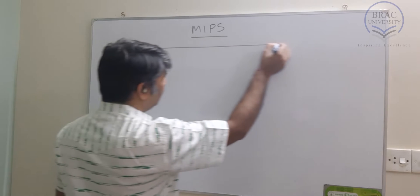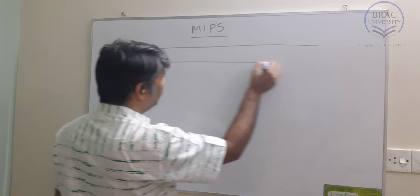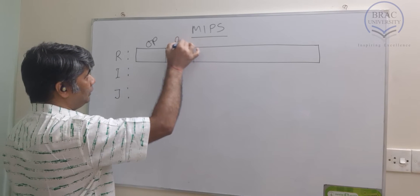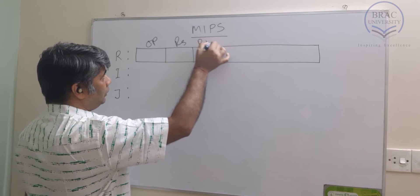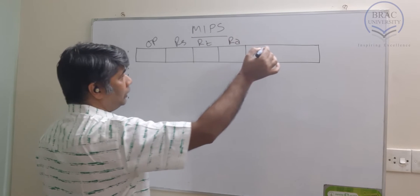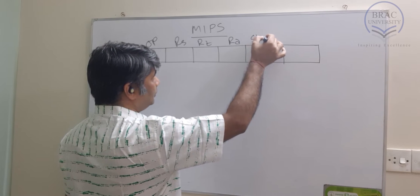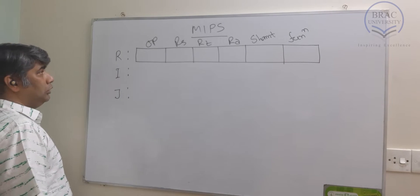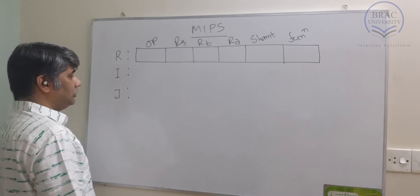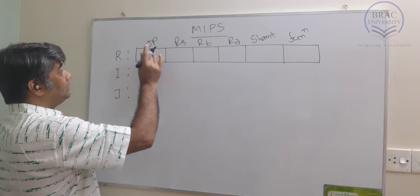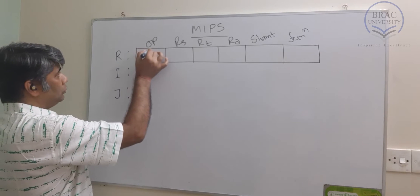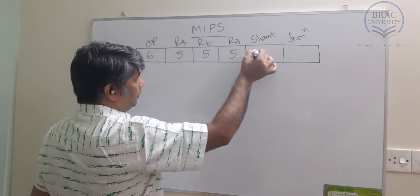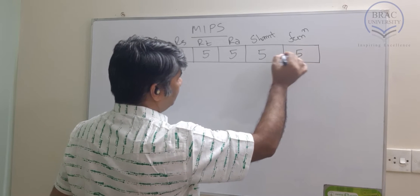The MIPS instruction formatting looks like this. We have opcode, then we have RS, RT, RD, shift amount (SHAMT), and then we have function. All instructions — R, I, or J — are 32 bits. The opcode contains 6 bits, RS 5 bits, RT 5 bits, RD 5 bits, shift amount 5 bits, and function 6 bits.